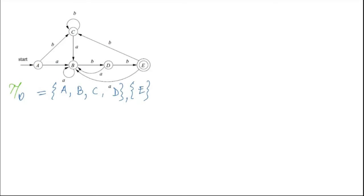So next what we can do is, we can just try to split this state, because splitting of a state with only one element is not possible. So if you look at the state where we have more than one element, we will try to split this state based on their behavior. Now see how we can do it.